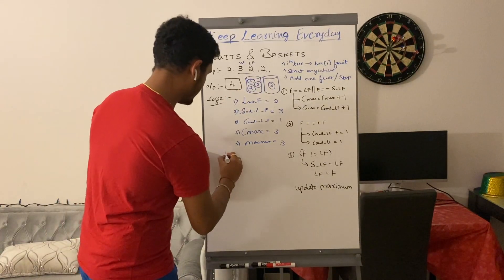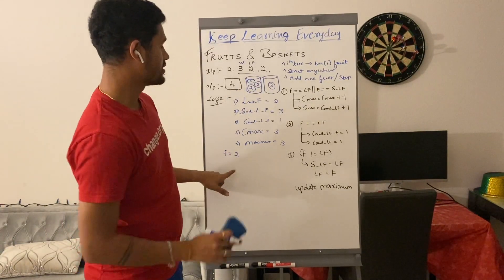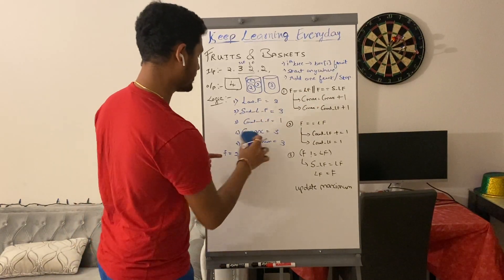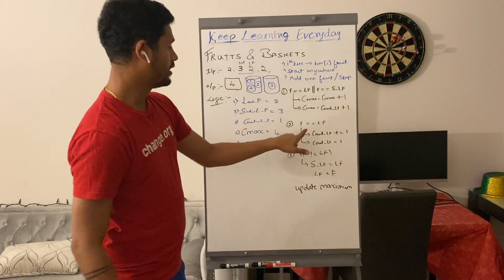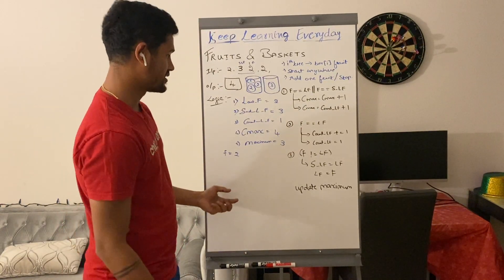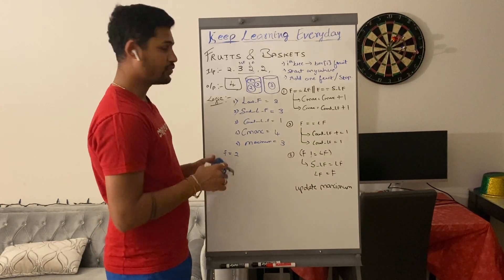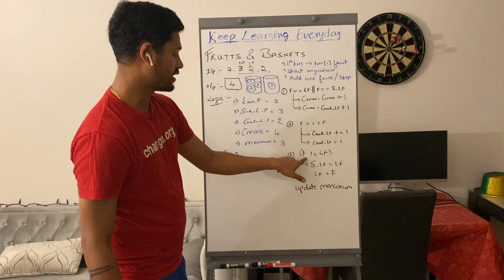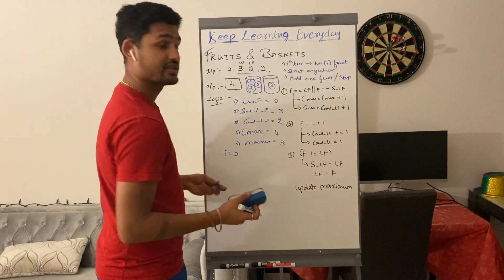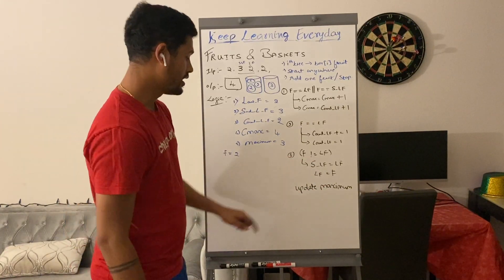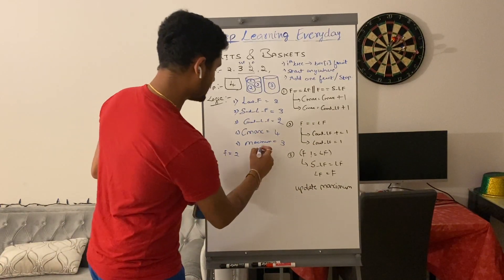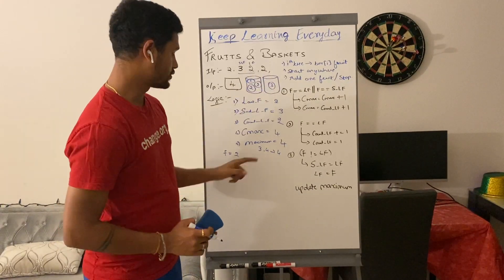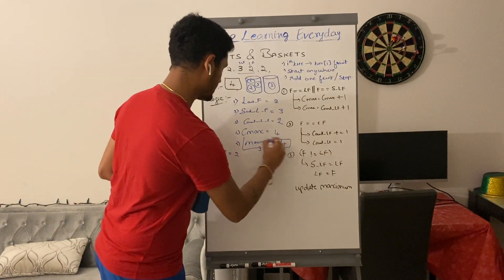We pick the last element — fruit is 2 again. Fruit equals last_fruit (2), so we increment current_max from 3 to 4. Since fruit equals last_fruit, we also increment count_of_last_fruit from 1 to 2. Fruit equals last_fruit, so we do not update second_last_fruit or last_fruit. We update maximum to max(3, 4) = 4. We've reached the end of the array and return maximum, which is 4 — that's our answer.